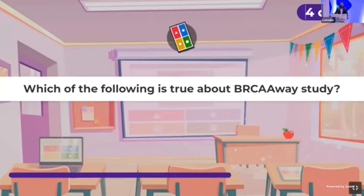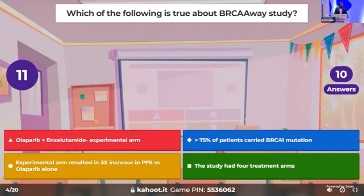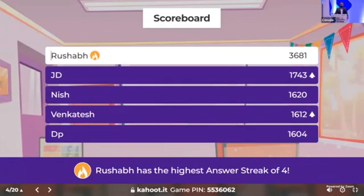Time for the fourth question: which of the following is true regarding the BRCA-Away study? Whether it was Olaparib plus Enzalutamide as the experimental arm, more than three-fourths of the patients carried BRCA-1 mutation, the experimental arm showed a three-fold increase in PFS, or the study had four treatment arms. We have 10 people who answered it correctly. Three-fourths of the patients actually had BRCA-2 mutation. Dr. Rushab maintaining the lead.